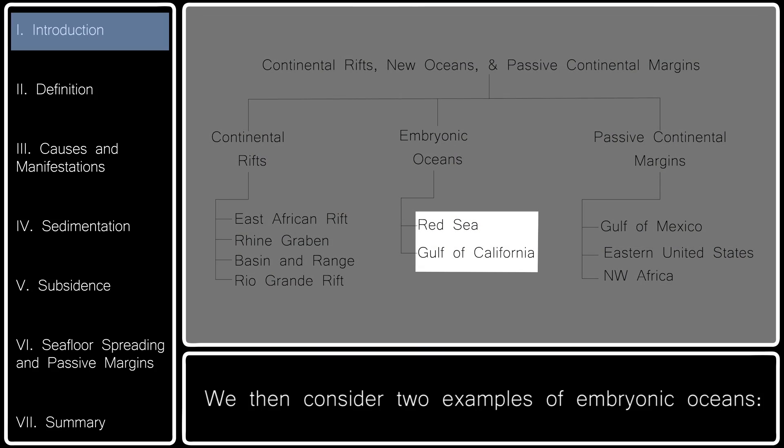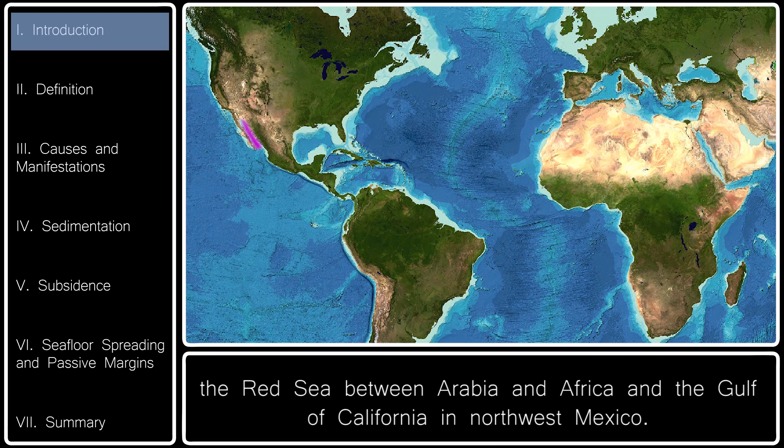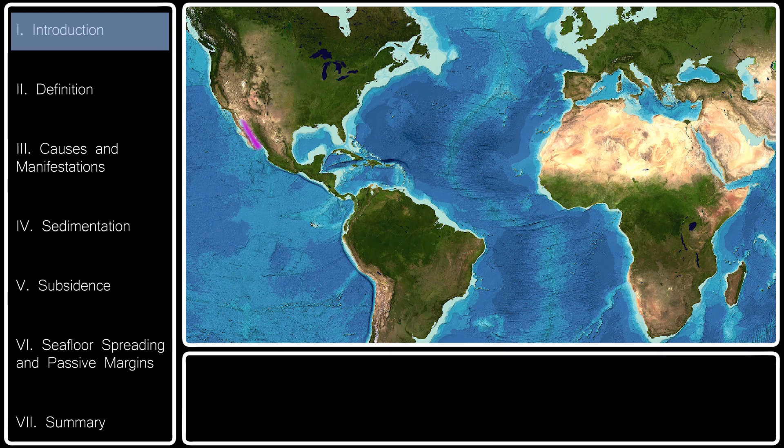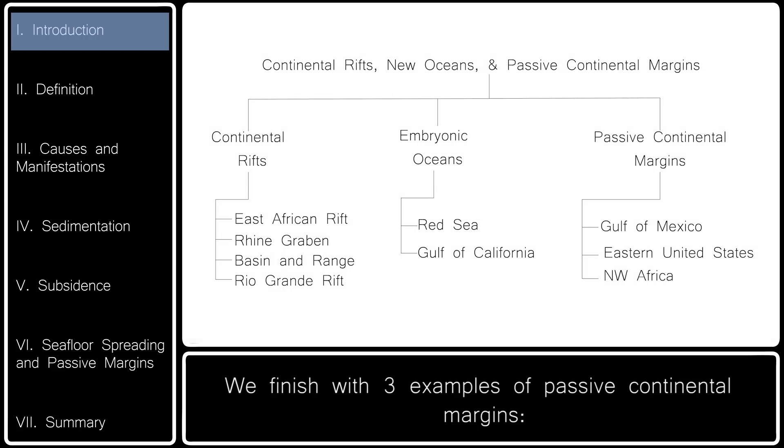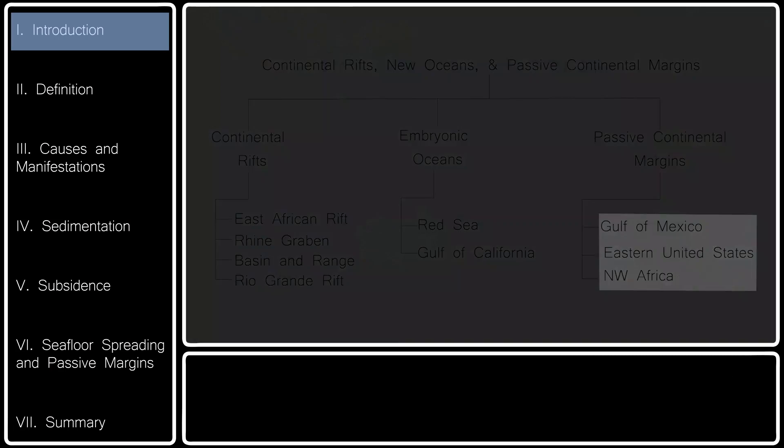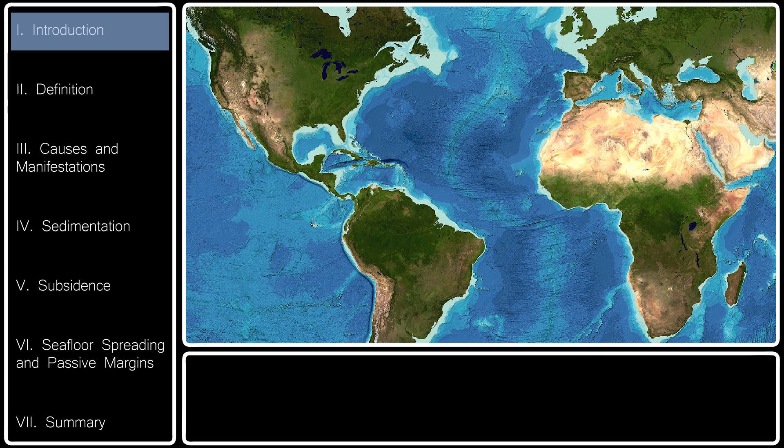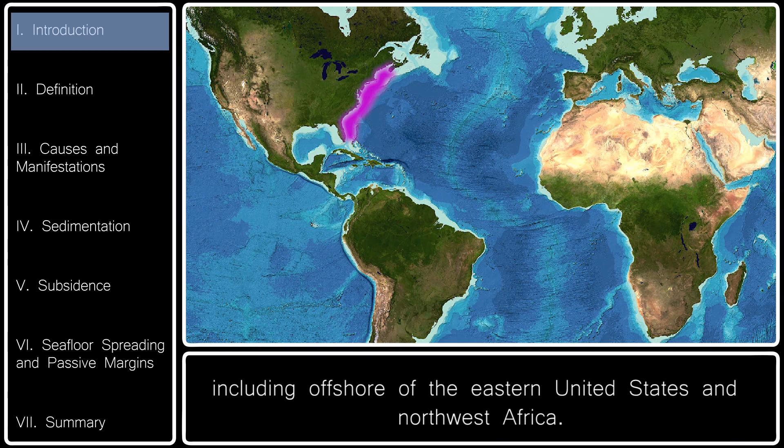We then consider two examples of embryonic oceans, the Red Sea between Arabia and Africa, and the Gulf of California in northwest Mexico. We finish with three examples of passive continental margins: those around the Gulf of Mexico and those around the Central Atlantic Ocean, including offshore of the eastern United States and northwest Africa.